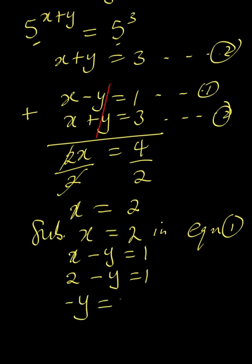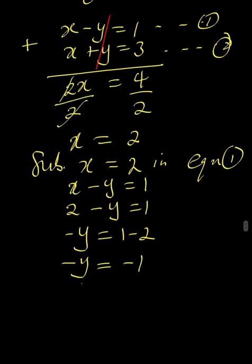So minus y is equal to 1 minus 2. And of course, minus y is minus 1. Multiplying both sides by negative 1, you see that y is equal to 1.